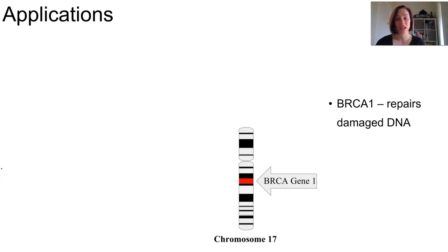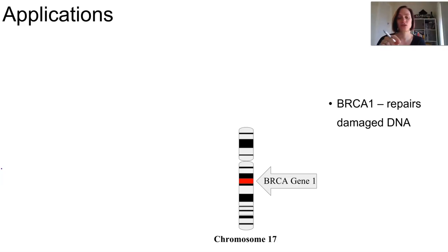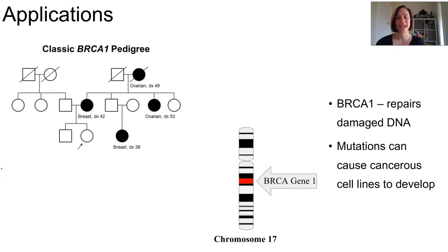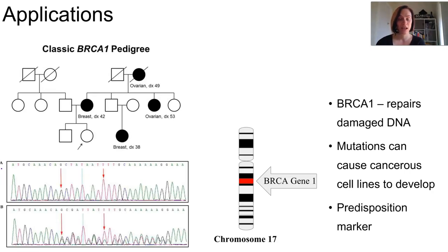It repairs damaged DNA. So if there are many mutations or damage to this gene, the protein can't correct the DNA damage, leading to more mutations accruing in the cell line, which can turn them cancerous. Because of this, it can be used as a marker for predisposition to cancer in different families — you can follow this mutated gene down through a family.